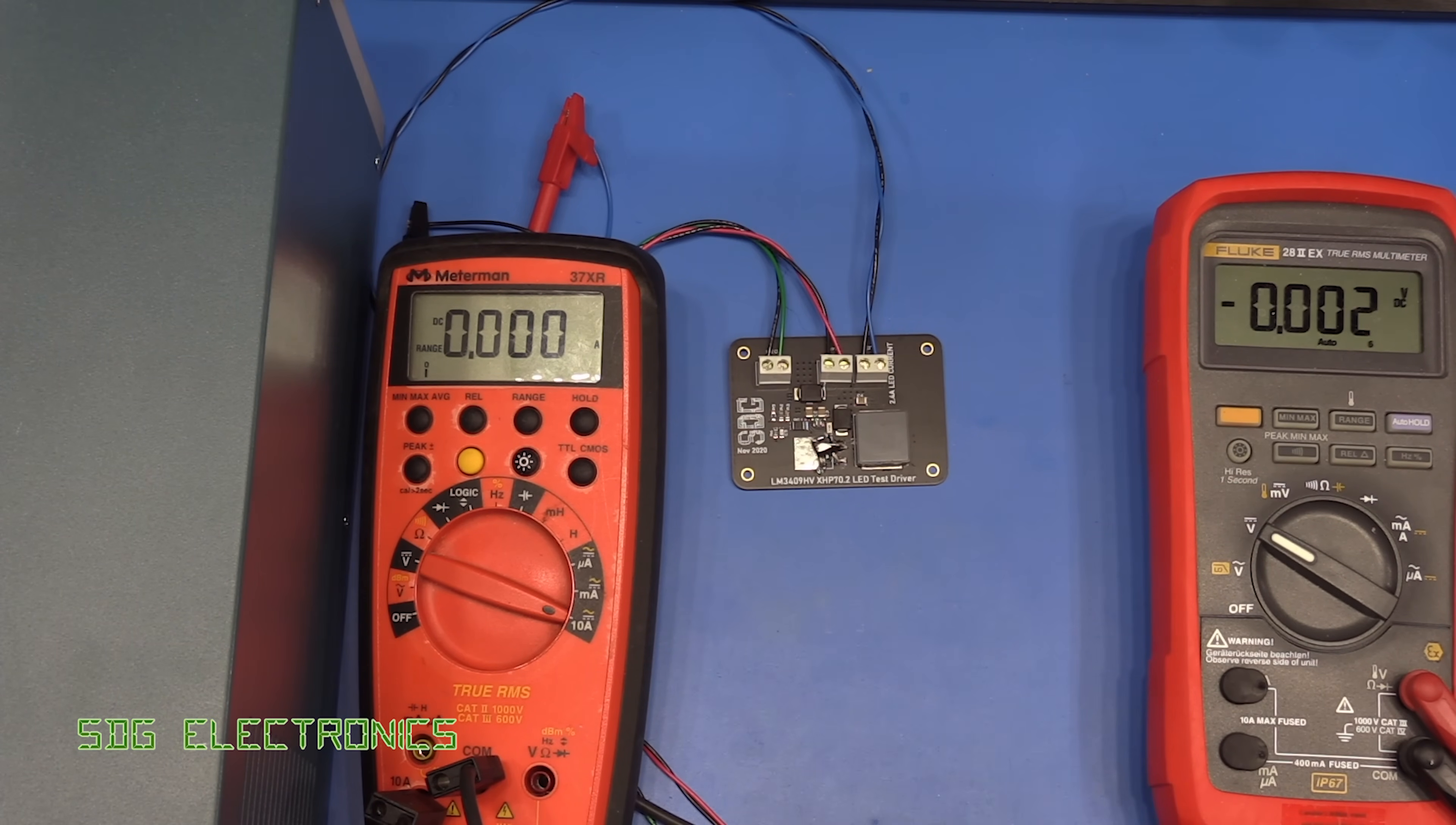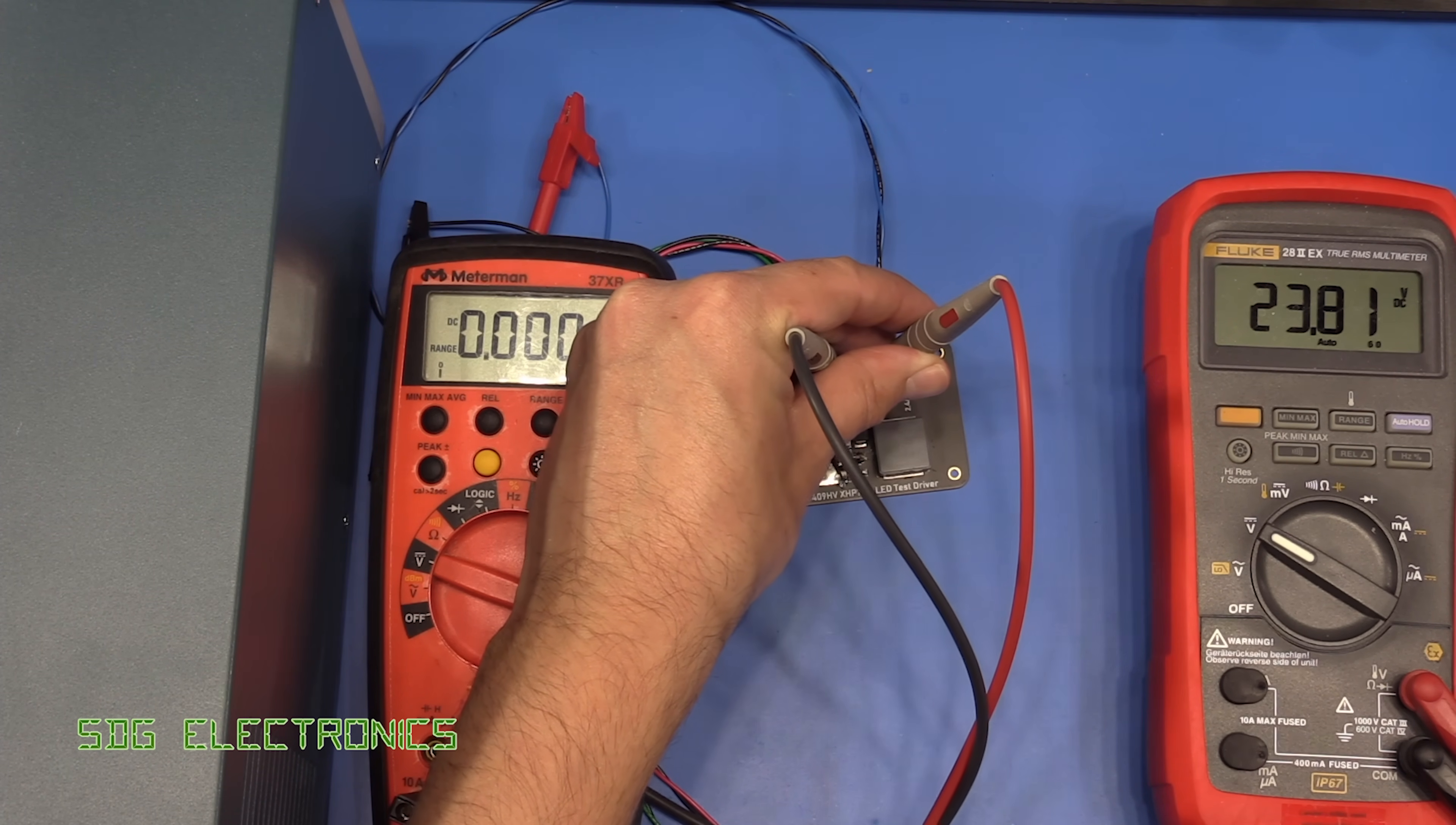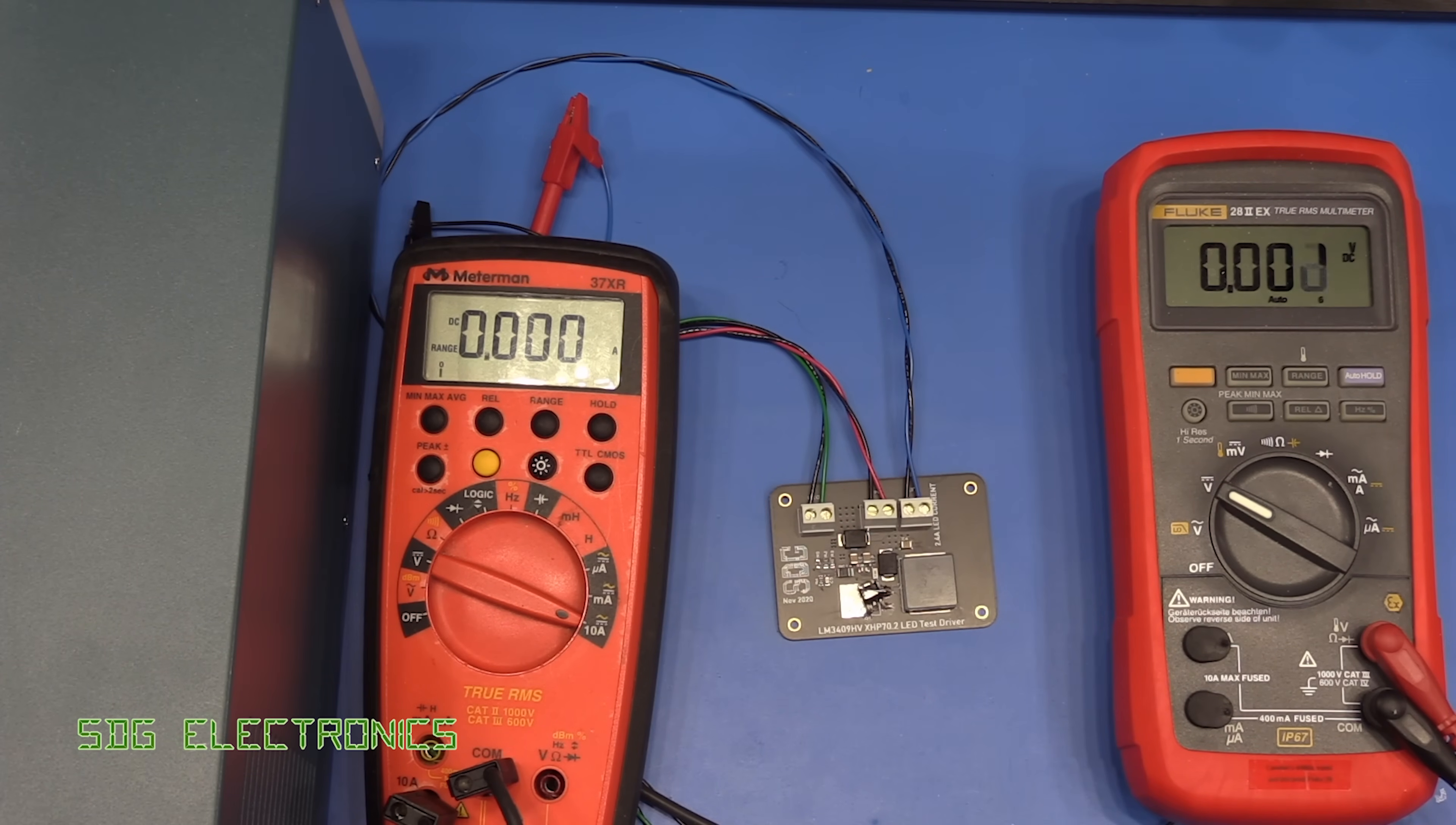So we've still got the enable pin tied to zero volts so when we turn on the power we should now see that no current flows. So let's put the probes on the input here so we should see when we get power turned on. And yeah that's more like it. So zero current when the enable pin is tied low. Okay so we've got the DC load set back to constant voltage mode. We may have a problem here with the two control systems fighting with each other but we should see the constant current being achieved anyway. And yeah about 2.2 amps.